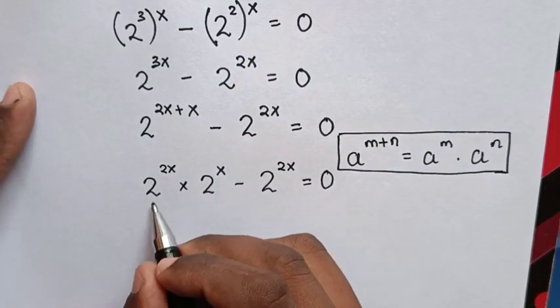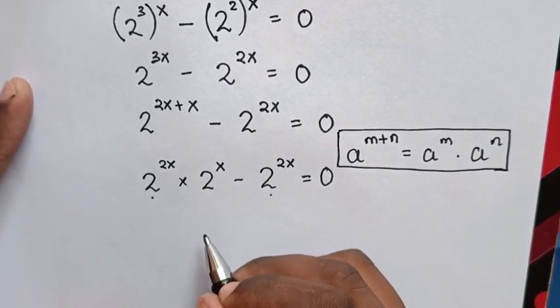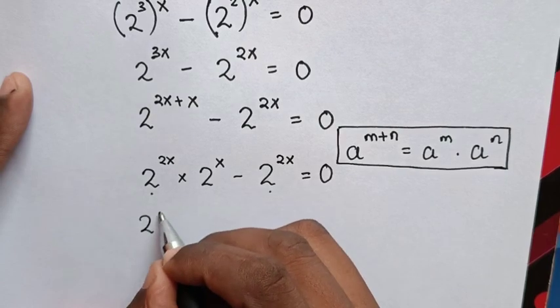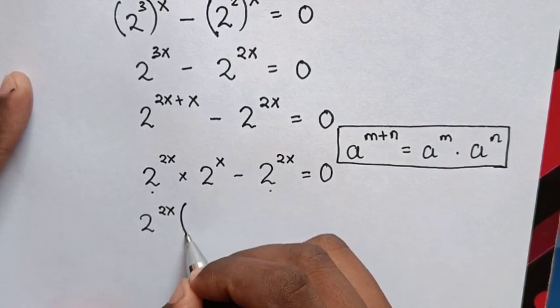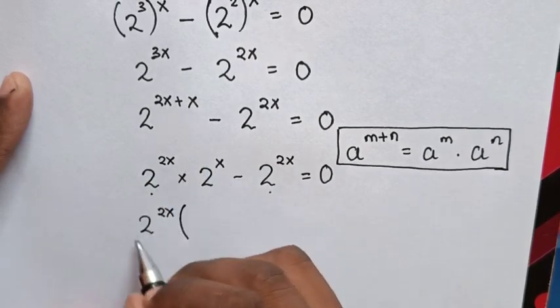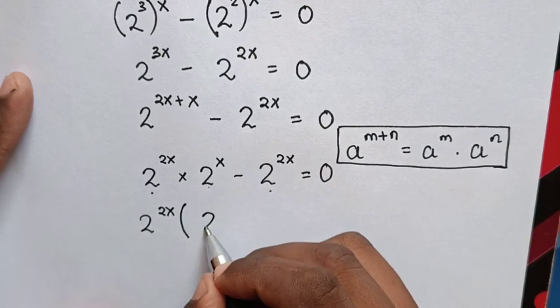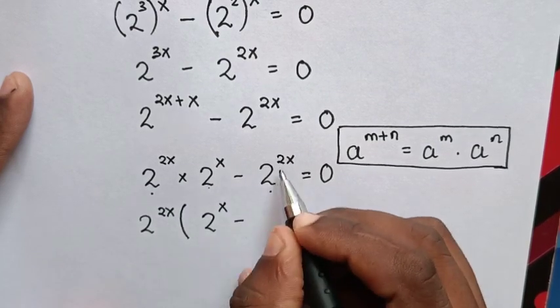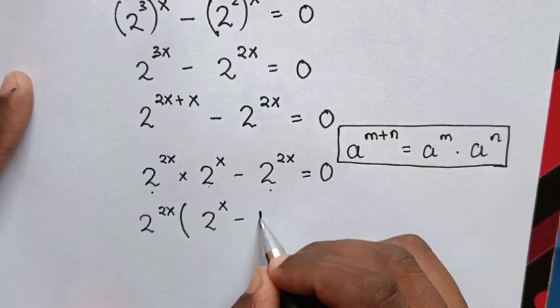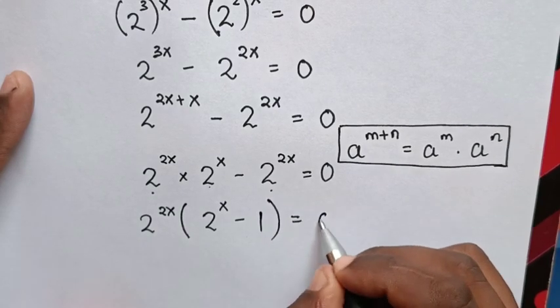Then we can see 2^2x is common, so we take 2^2x out of the bracket. This divided by this is 2^x, minus this divided by this is 1, equals 0.